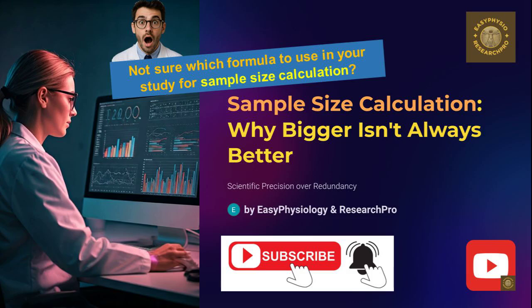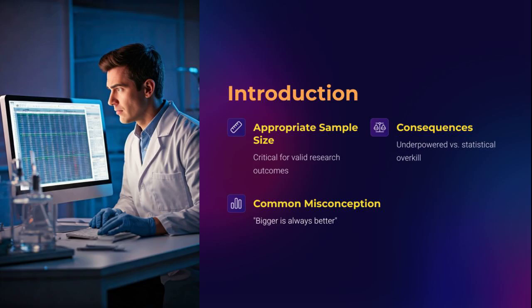Welcome to this powerful session on sample size calculation with Easy Physiology and Research Pro, a cornerstone of scientific research design that too many overlook or oversimplify. Today, we are diving into the age-old misconception that bigger is always better. While large sample sizes may seem appealing, especially in the age of big data, they do not automatically translate into better science. In fact, oversampling can introduce ethical dilemmas, inflate costs, and even increase statistical errors.